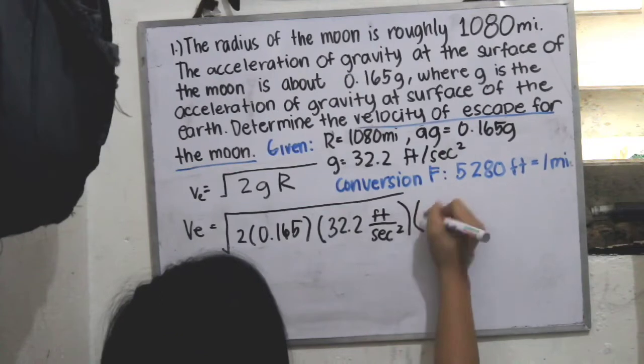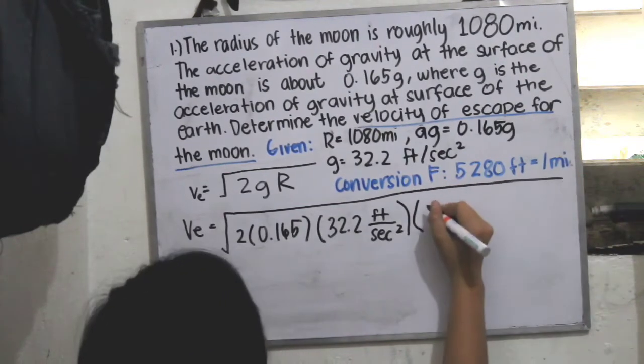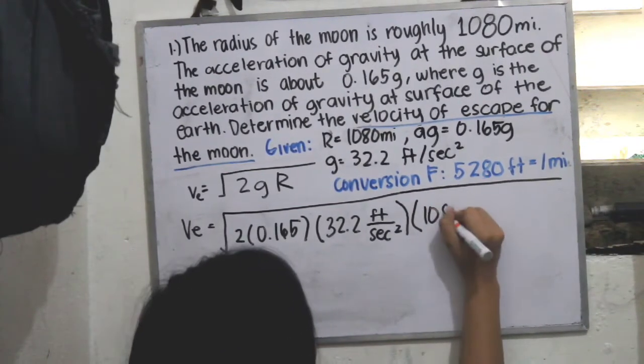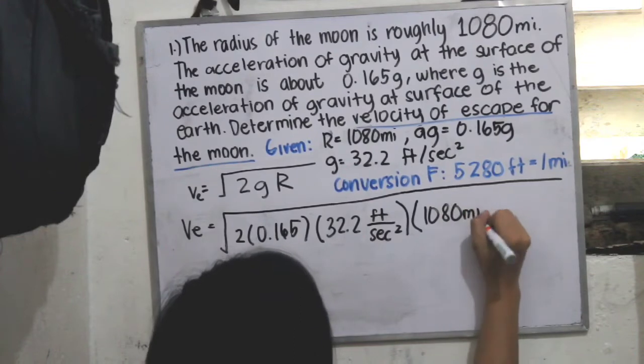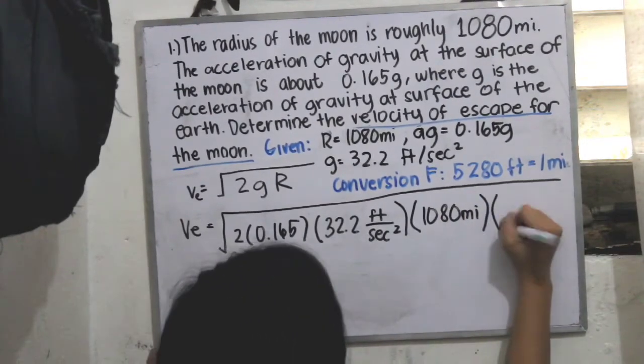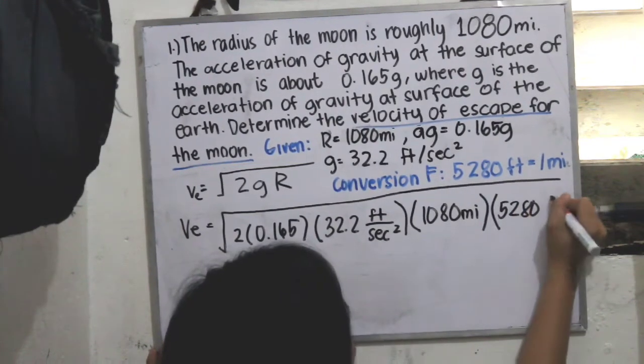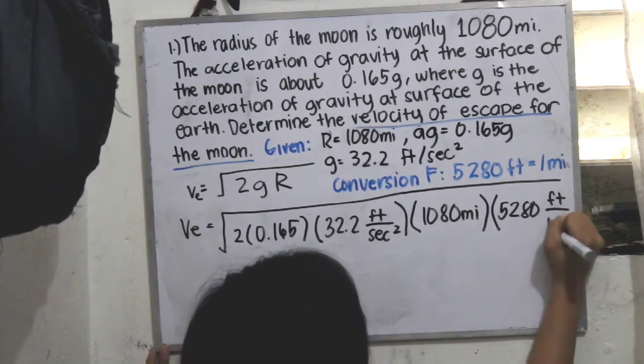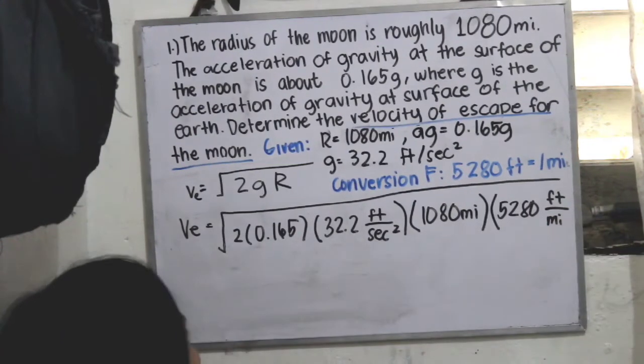And we have to multiply it again with 1,080 miles. And then we have to multiply it by our conversion factor, which is 5,280 feet per mile.